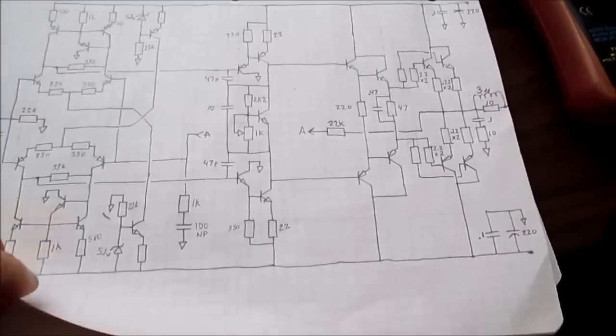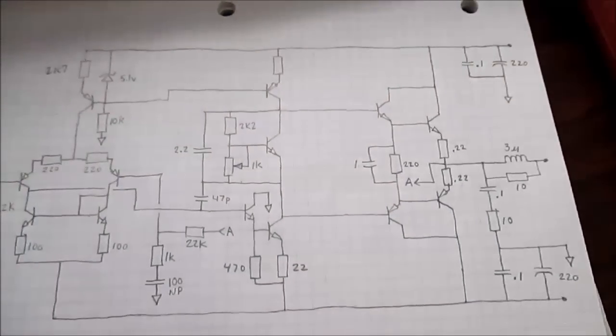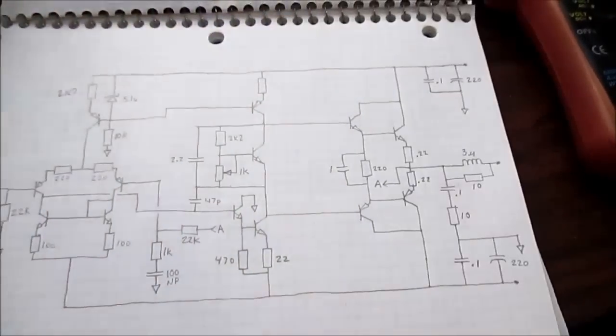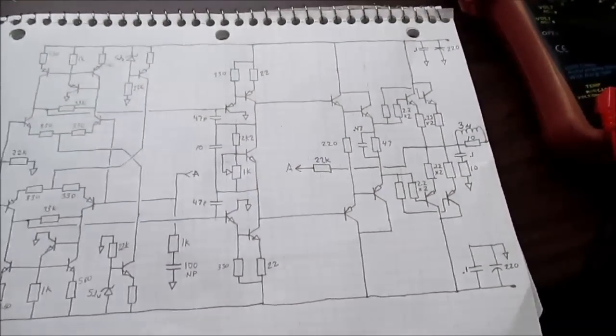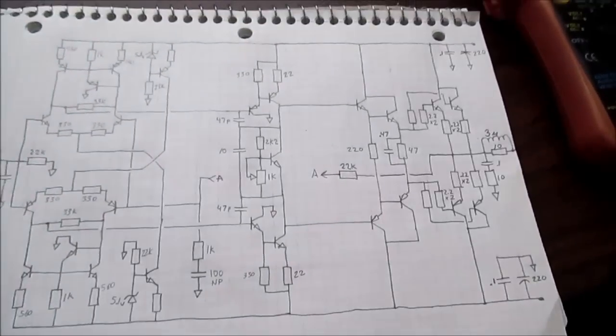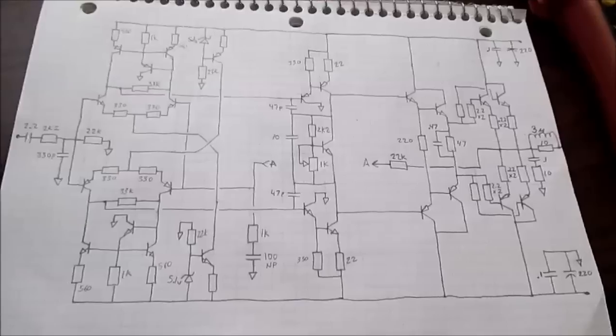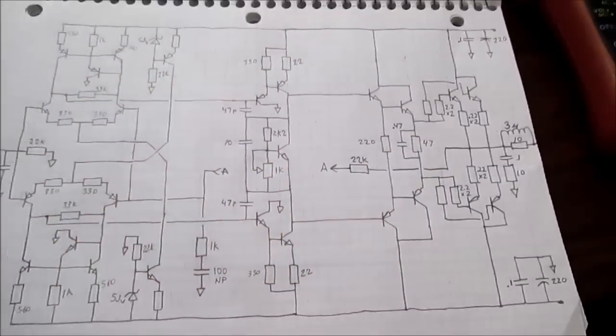One thing both these circuits do not have is current limit. And a finished amp would require a couple more transistors and a couple diodes and some resistors for a current limit circuit. And this thing with the current limit would probably be like 27 transistors, I think. So there's a lot of parts in it.